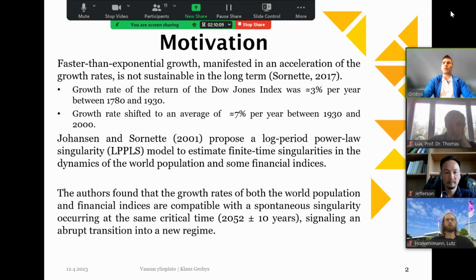So, what's the motivation for that study? If you have a mean that is constant, through the compounding effect, eventually it has exponential growth. But faster than exponential growth, which occurs when the mean is changing, is manifested in an acceleration of growth rates, and that is not sustainable in the long term, according to Sornette. If we consider the Dow Jones 30 index, the growth rate of return between 1780 to 1930, the average growth rate was 3%. However, in the period that followed, from 1930 until 2000, the growth rate shifted from 3% to 7%.